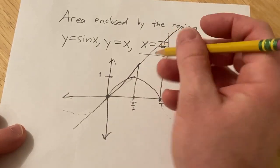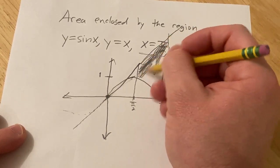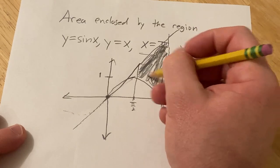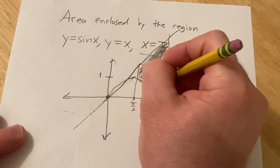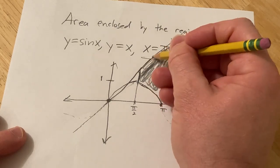So we basically have to find this area here enclosed by these graphs. We have sine x, we have x equals pi over 2, and x equals pi, and then we have y equals x.